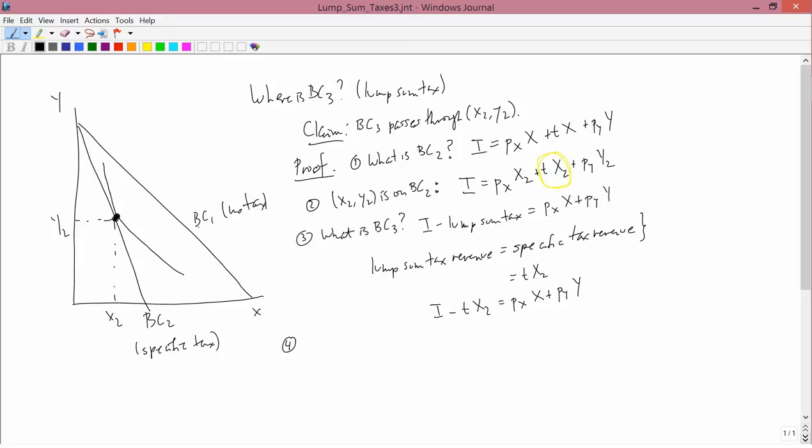Number four: Is the point X2, Y2 on BC3? The claim up here on top is that it is. Of course, it's on BC2, but the question is, is it on BC3? The claim up on top is that it is, that X2, Y2 is on BC3. To answer this question algebraically, is X2, Y2 on BC3, what we want to do is ask whether, if you plug X2 and Y2 into BC3, you get a true statement or not.